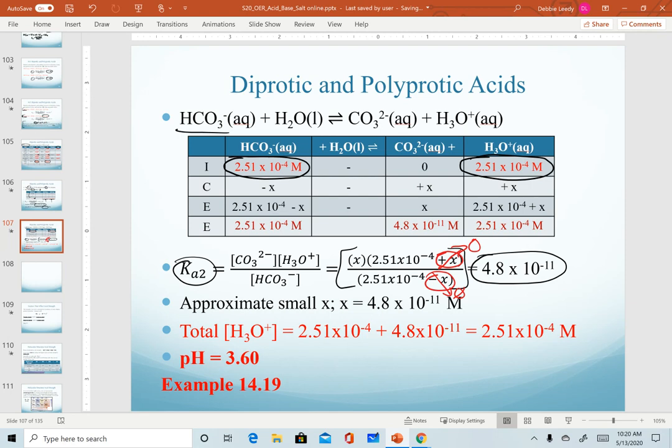And so hopefully you recognize it, then that means that these numbers can just cancel out, and so our x value actually ends up equaling our Ka2 value. That means our total concentration of hydronium from both ionizations is the sum of the first step plus the second step. But the second one is so small that when we add them together, we really just get the concentration from our first ionization. And so that's how we calculate pH.